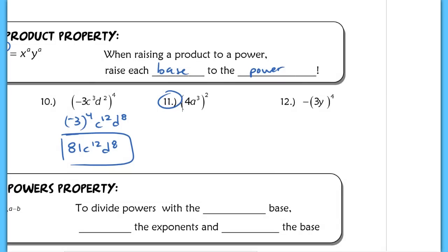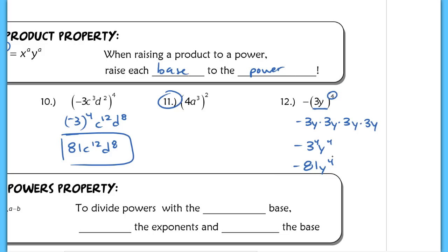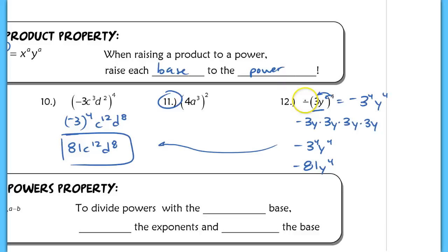I want you to try eleven on your own. I'm going to work on twelve with you. In number twelve, some people have trouble with this negative on the outside. Right now, the only thing being raised to the fourth power is the 3y. If I expand this, the negative doesn't get repeated, so overall my answer should have a negative. Since the three is repeated four times, that's 3 to the fourth and y to the fourth. We just evaluated 3 to the fourth — that's 81. So I end up with negative 81y to the fourth. Make sure you're only distributing the four to the inside of that product, which is 3y. That negative stays on the outside.